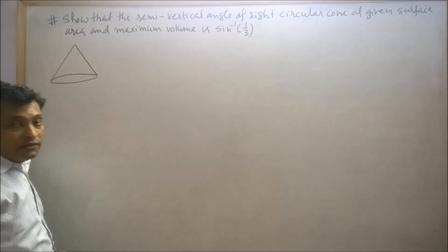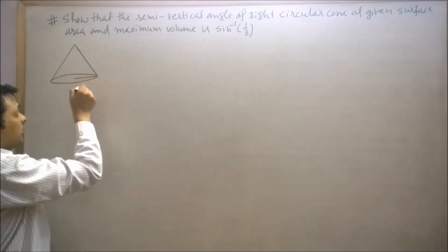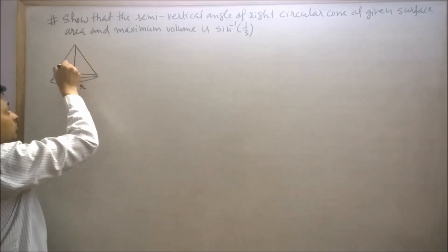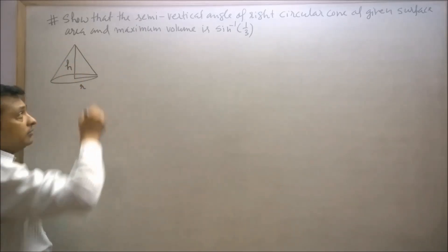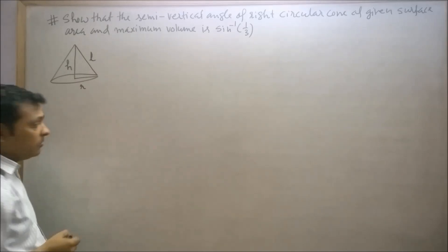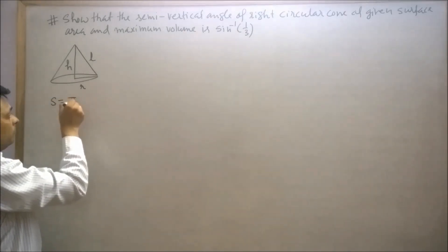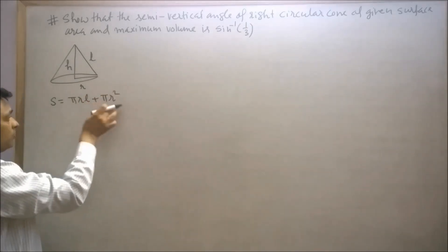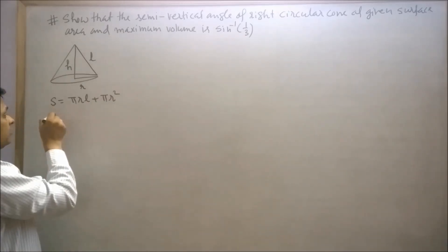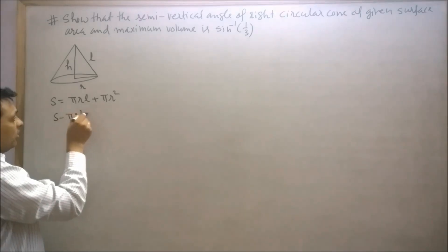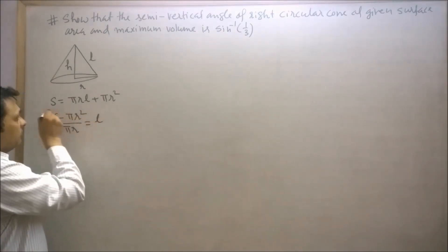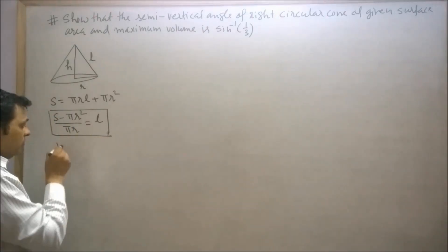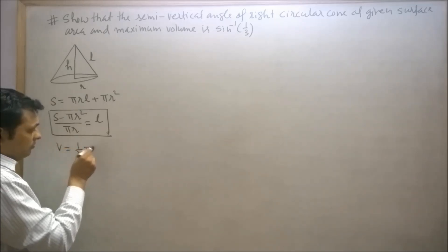First of all, I will draw the figure of this question. Let this be our right circular cone where the radius is r, the height is h (small x), and the slant height is l. The given surface area equals πrl + πr². Transposing πr² to the left side: (S − πr²)/(πr) = l. The volume of this cone is (1/3)πr²x.